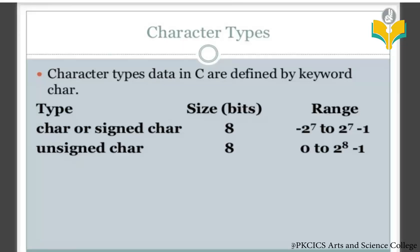The size of a single character (signed char) is 8 bits, or 1 byte. Unsigned char has the same size — 8 bits, 1 byte — with a range of 0 to 2^8 - 1, since unsigned means purely positive.